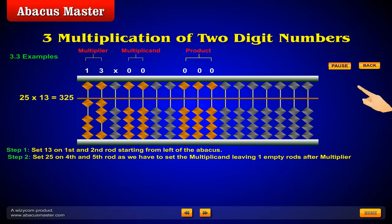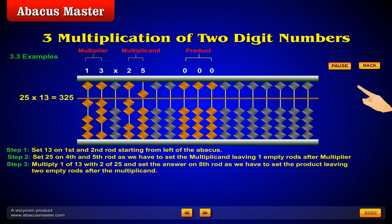Step 2. Set 25 on fourth and fifth rod, as we have to set the multiplicand, leaving one empty rod after multiplier. Step 3.